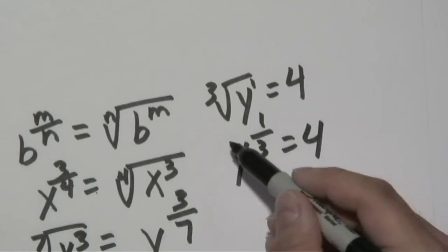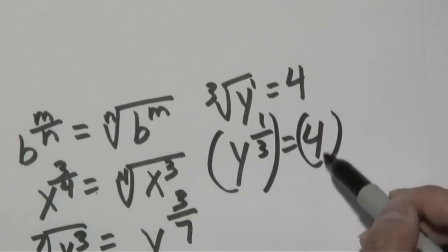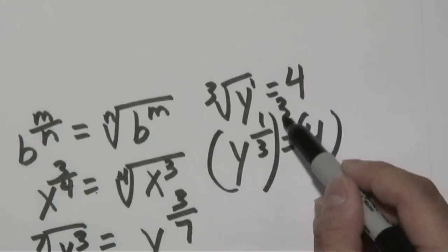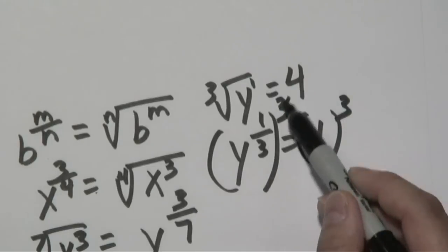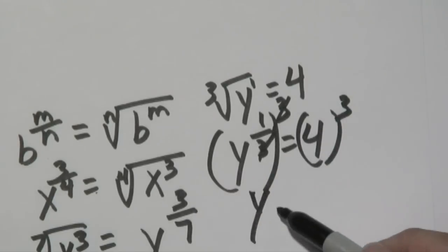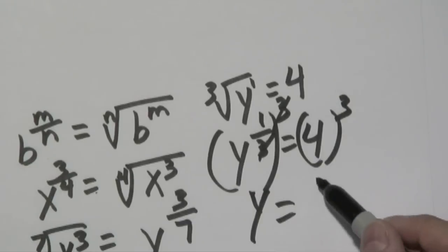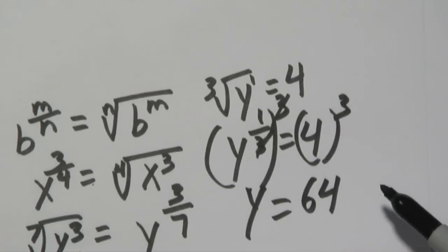Just like we did in the previous example, we're going to raise both sides to the denominator, which is 3, and the 3's will cancel. You have y equal to, and 4 to the third is going to be 64.